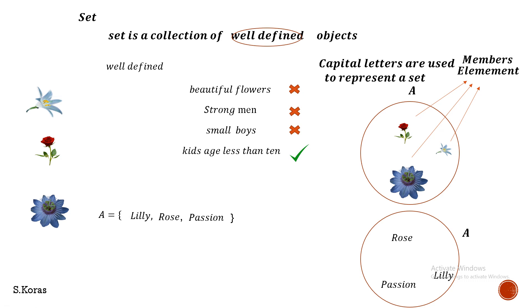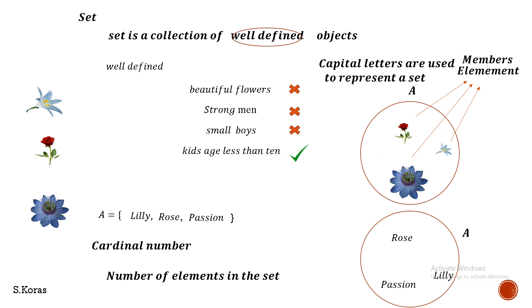Now you know what a set is. Let's move to the next term: cardinal number. The cardinal number is the number of elements inside the set. It is represented as N(A) for a set named A. In our set A, there are three elements, so N(A) = 3.